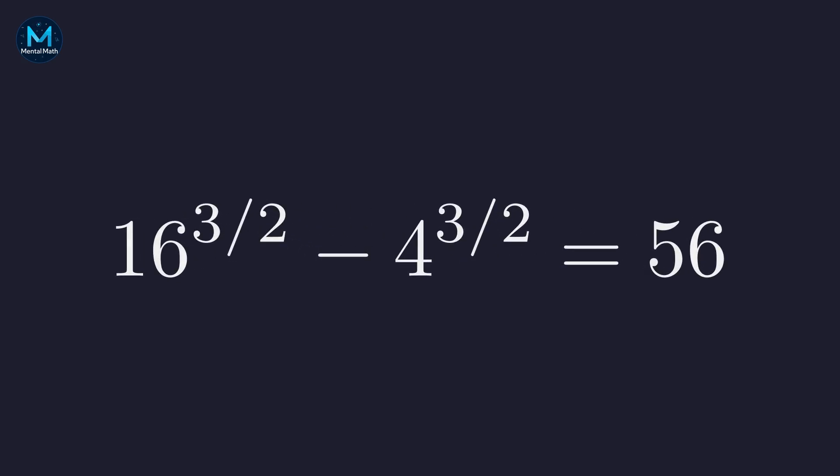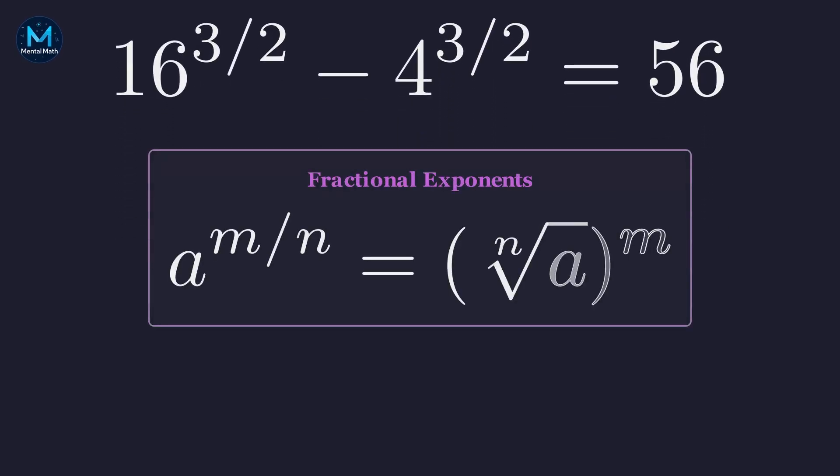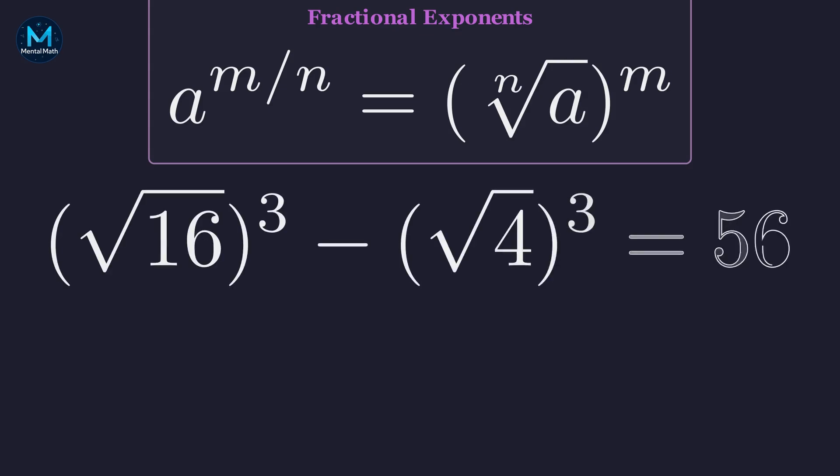Our original equation, 16 to the x minus 4 to the x equals 56. Substituting x equals 3 halves. With fractional exponents, the denominator tells us the root and the numerator tells us the power. So 16 to the 3 halves becomes the square root of 16, all cubed.